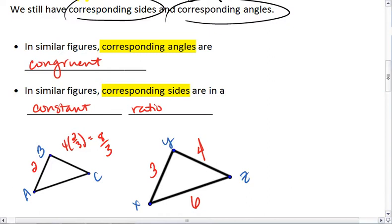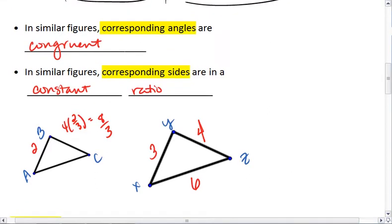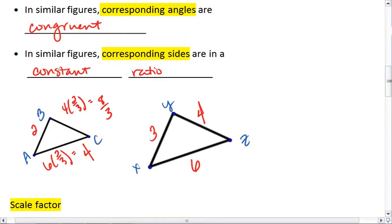And then AC is also going to be 2 thirds the length. We get 6 times 2 thirds, which is 4. That's because everything is in a 2 to 3 ratio.